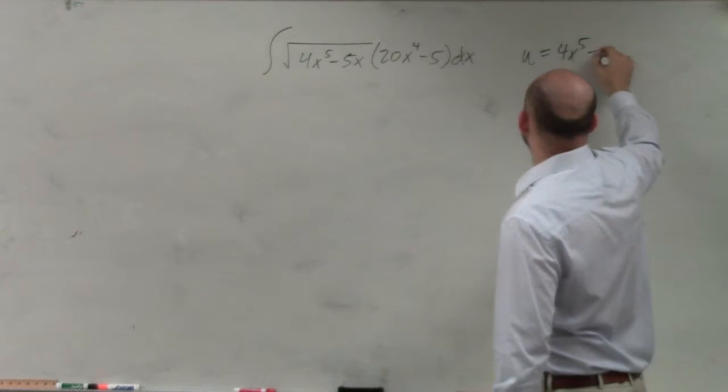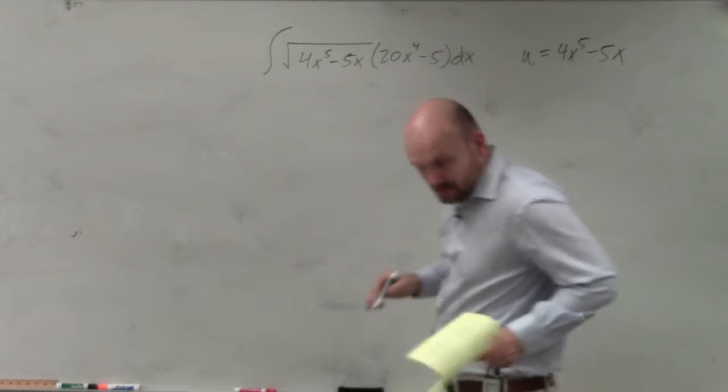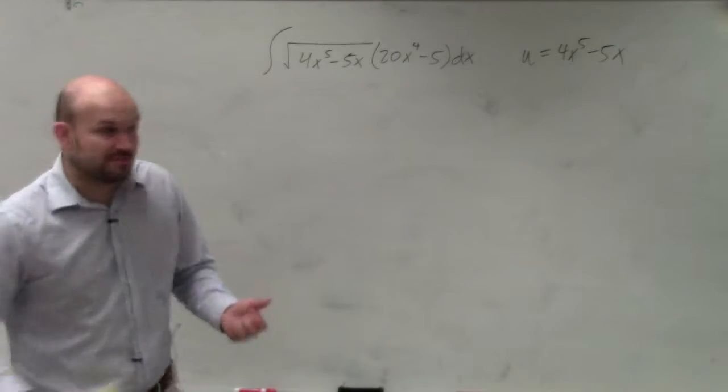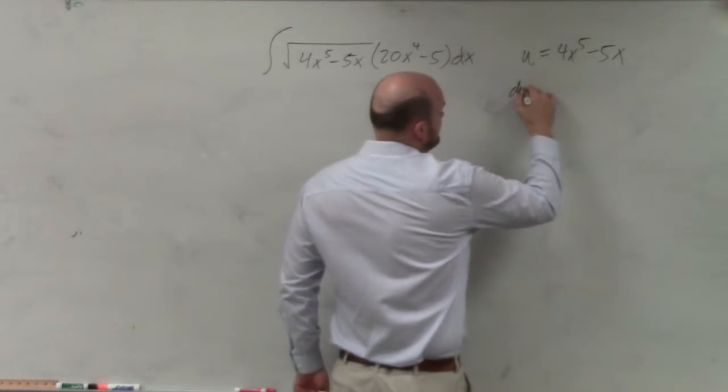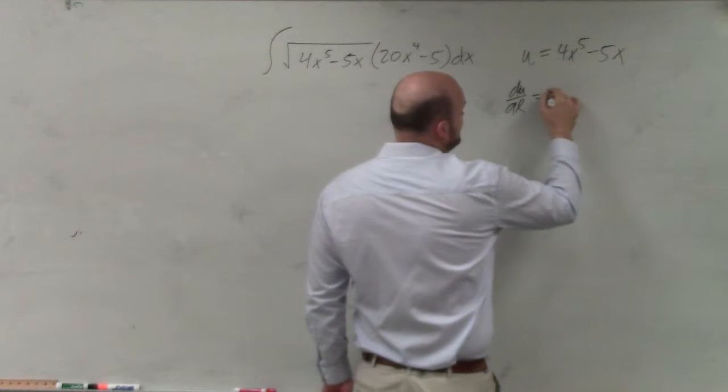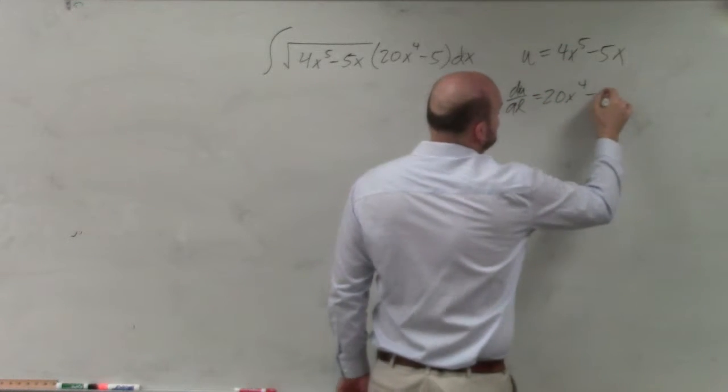my u is 4x to the fifth minus 5x. Then the next thing we'll want to make sure is we have a du/dx. So we just go ahead and differentiate that, which is 20x to the fourth minus 5.